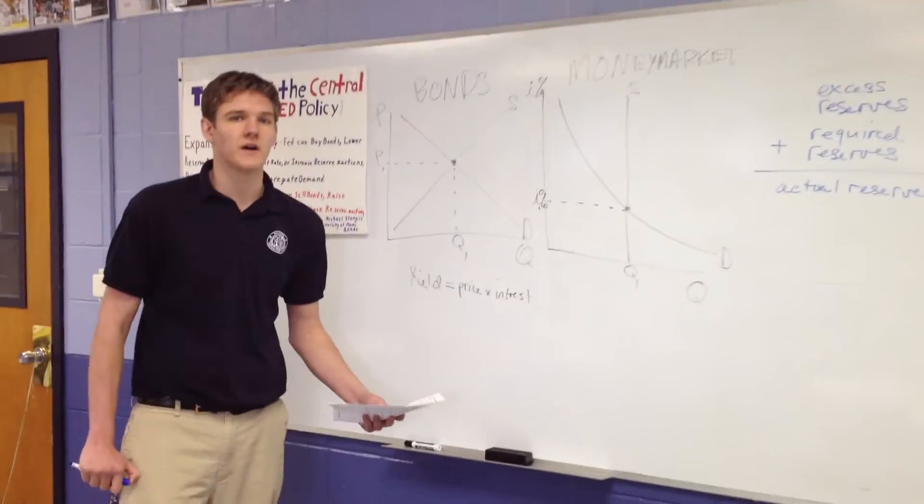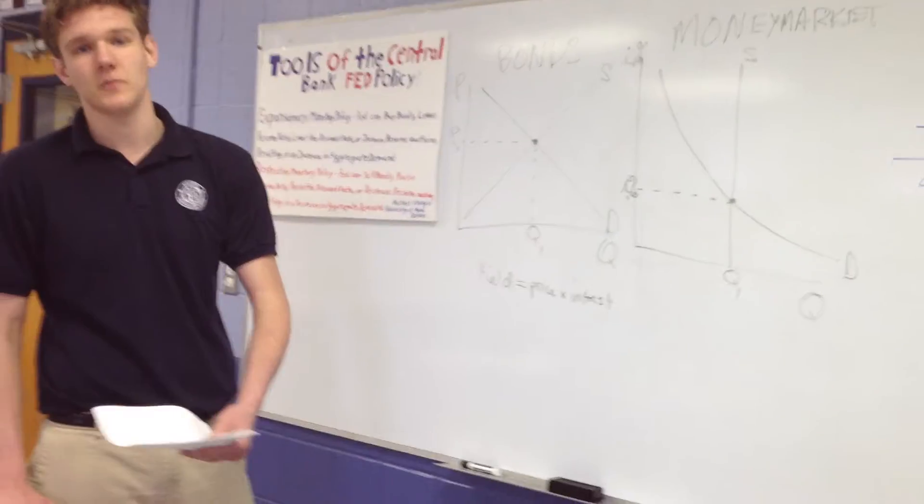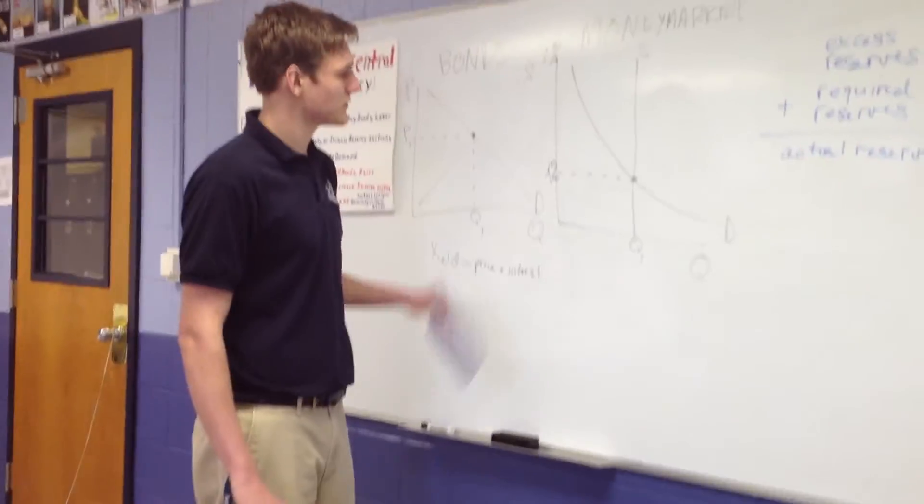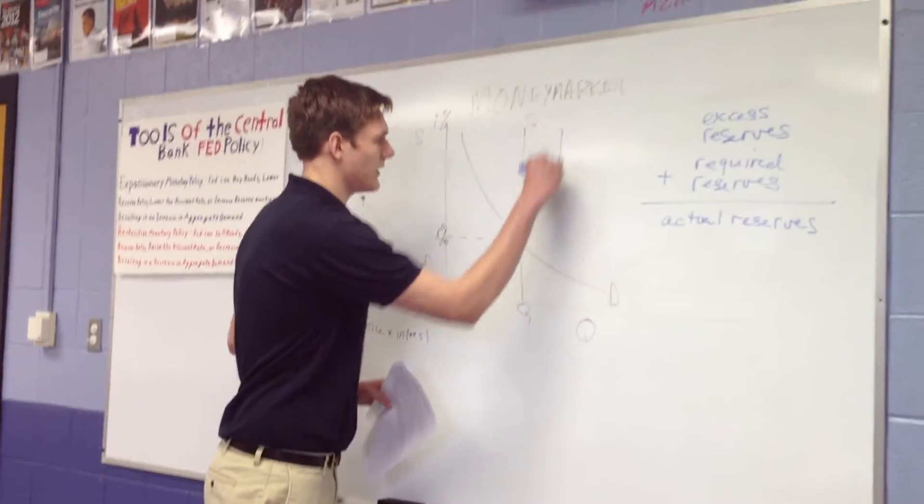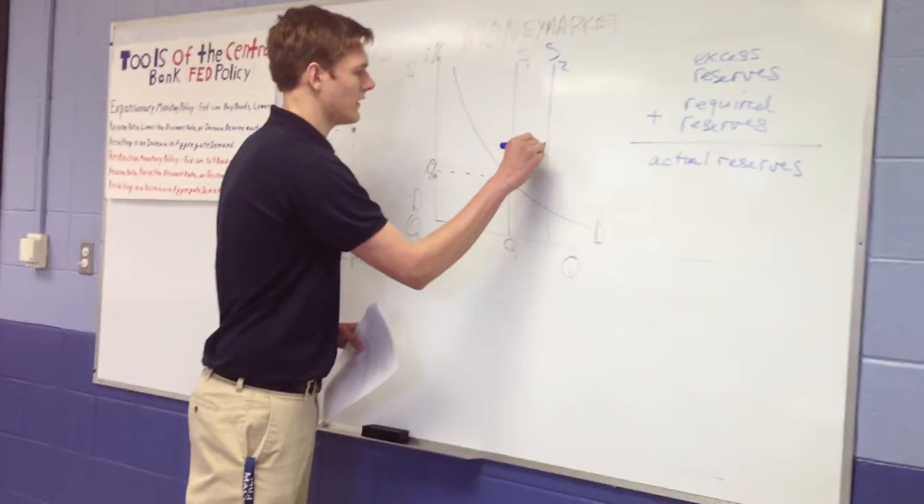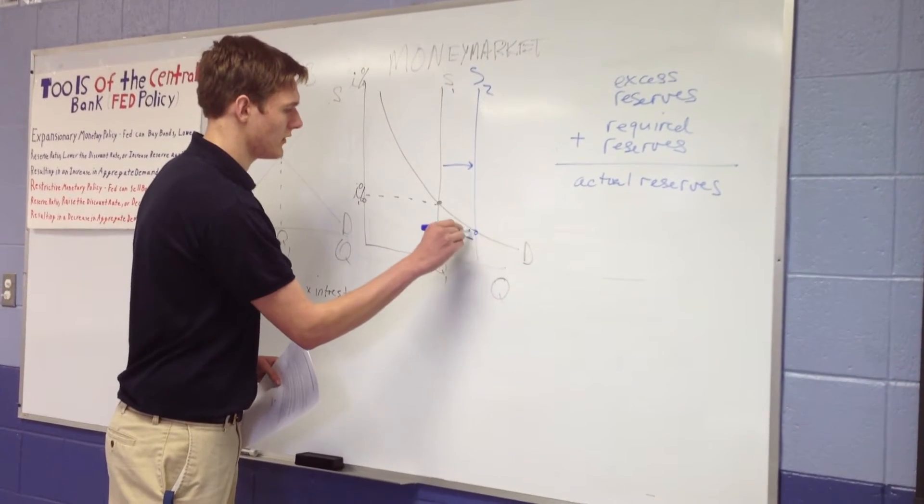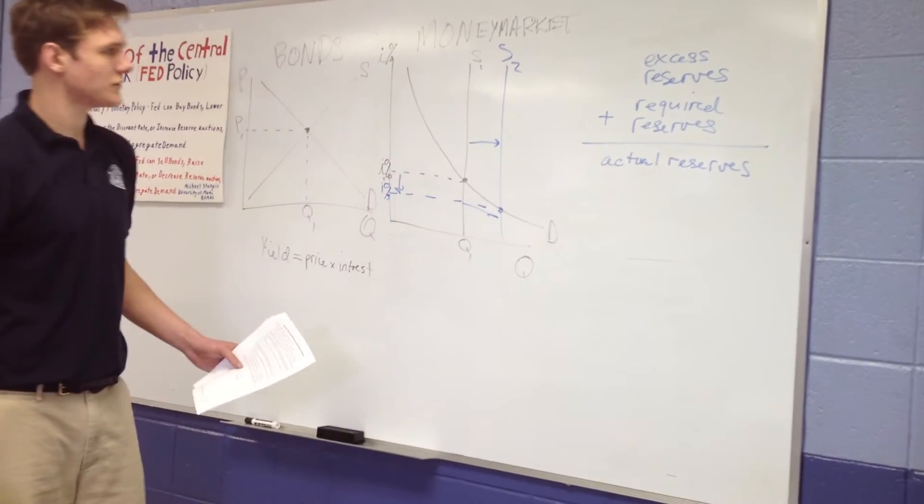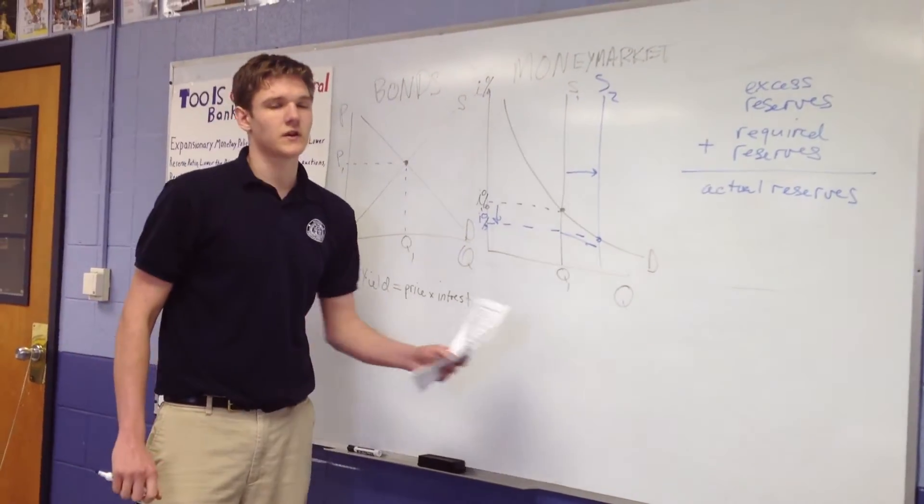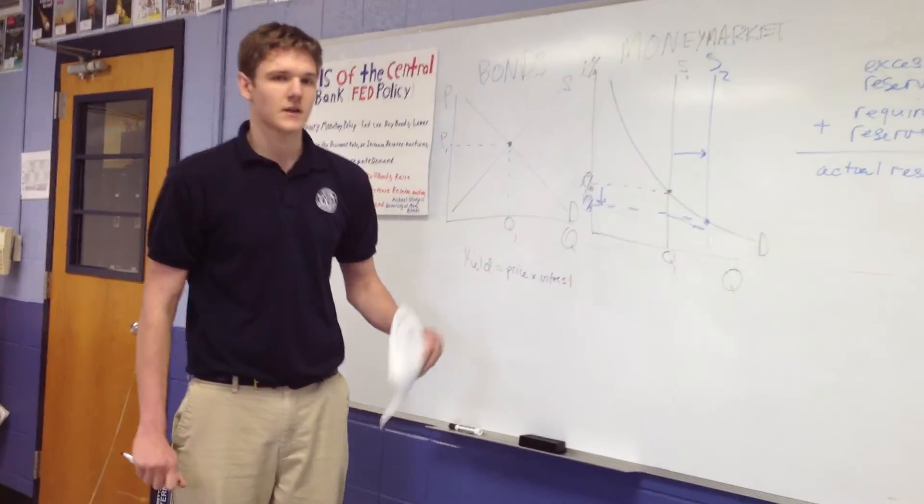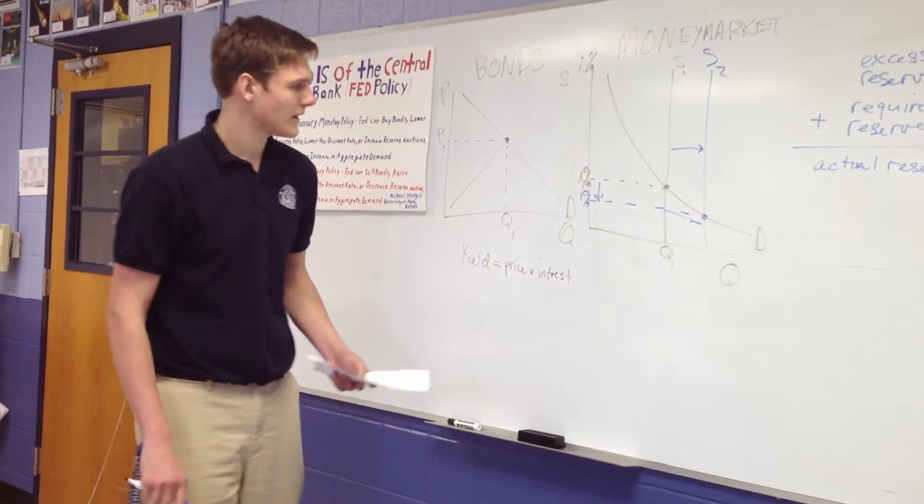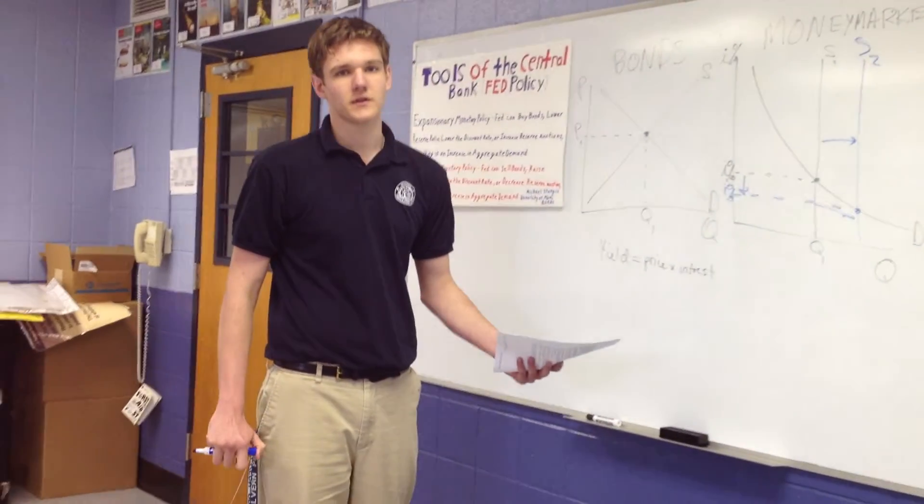Okay, so an open market operation is referring to what the Federal Reserve will do with bonds. They can either buy bonds or they can sell bonds. So they're thinking, we want to make this interest rate lower. If we increase the supply of money, then that will give us a lower interest rate. You see the interest rate decreases. So they want to increase the supply of money. To increase the supply of money in banks, they have to buy bonds and give the banks money for those bonds. So the open market operation is to buy bonds.